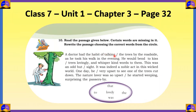First blank: 'A doctor had the habit of talking [dash] the trees by the roadside.' We need to connect 'talking' with 'trees,' so we need a preposition. The only preposition in the circle is 'to.' It connects both parts of the sentence — talking from the doctor to the trees. So the answer is 'to.'